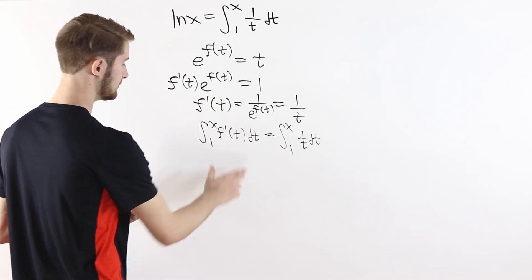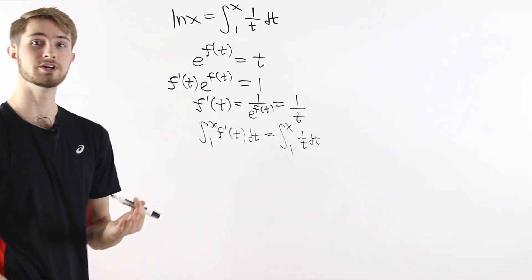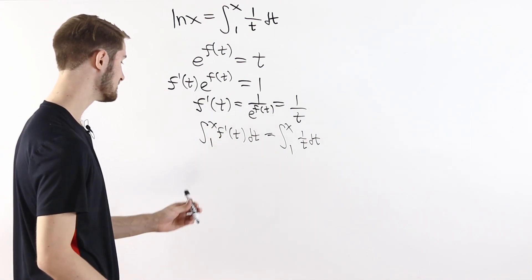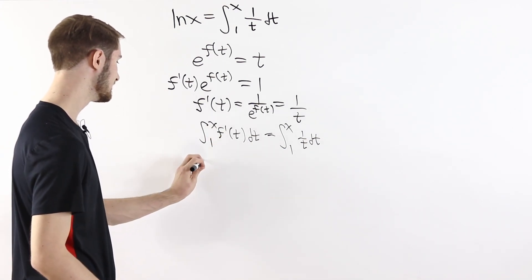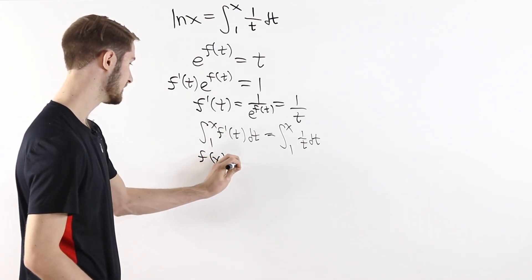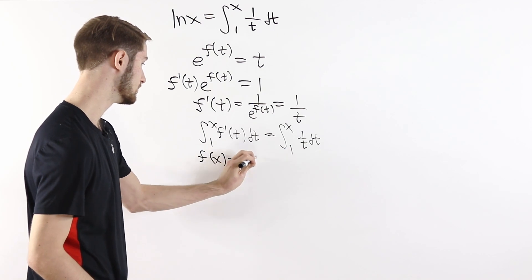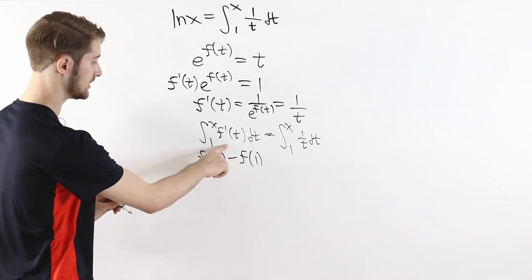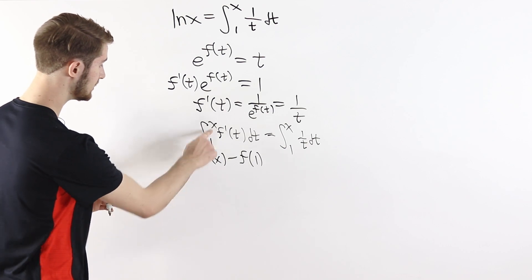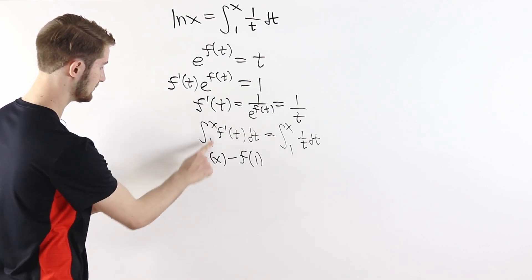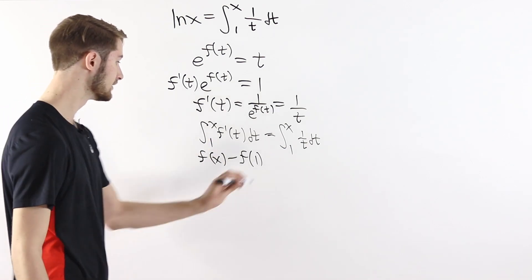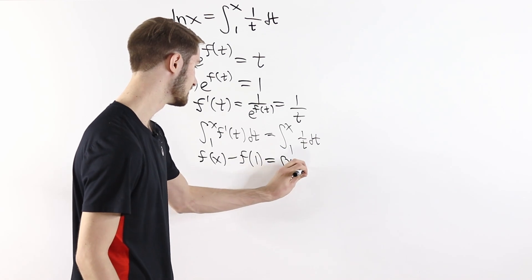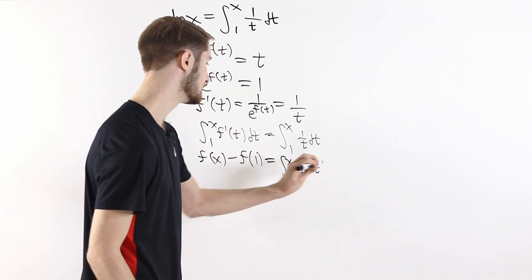On the left side, we can use the fundamental theorem of calculus. The integral from 1 to x of f prime of t dt is just f of x minus f of 1. We take the antiderivative of f prime, which is just f, and then we plug in the two bounds x and 1. So this is equal to the integral from 1 to x of 1 over t dt.